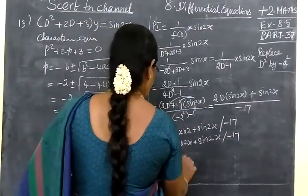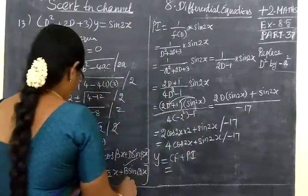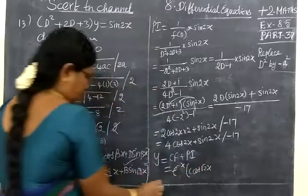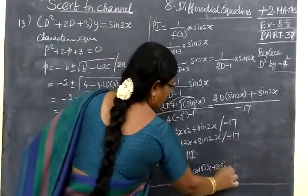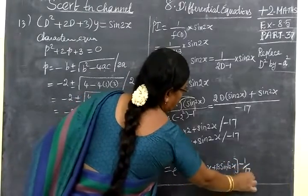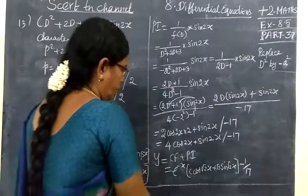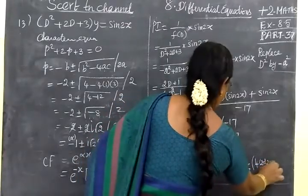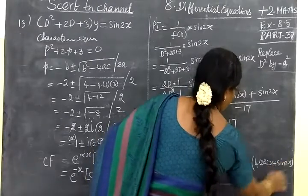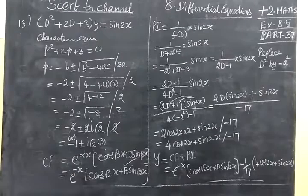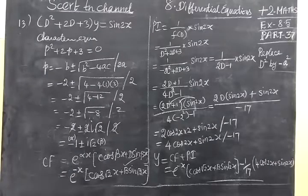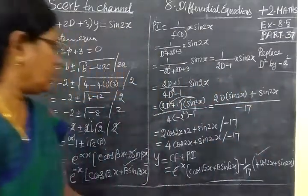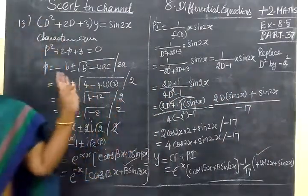The complete solution is Y = CF + PI. CF is e^(-x). Then C cos(√2x) plus B sin(√2x) minus 1/17. The denominator becomes 17. Then 4cos(√2x) + sin(√2x). So e^(-x)[C cos(√2x) + B sin(√2x)] - 1/17[4cos(√2x) + sin(√2x)]. So this answer is correct. In the next class we see 438.